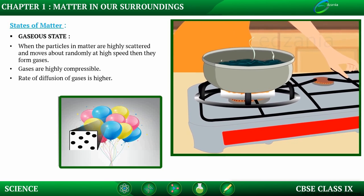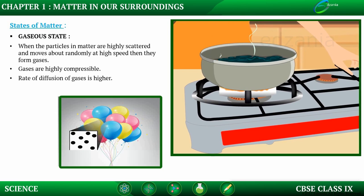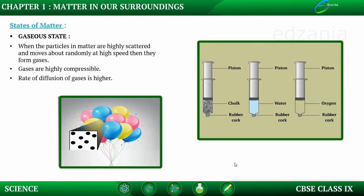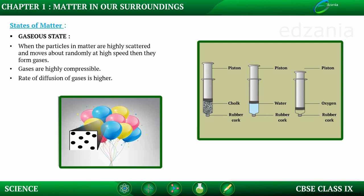The smell of hot cooked food reaches us in seconds due to the high speed of particles, i.e., high kinetic energy and larger spaces in between them. To understand the compressibility of gases, consider three syringes with a rubber cork at their mouths: the first filled with chalk (solid), the second with water (liquid), and the third with oxygen (gas). When we compress the piston, compression is highest in oxygen (gaseous form), lower in water, and very little in chalk (solid state). Therefore, gases are a highly compressible state of matter.